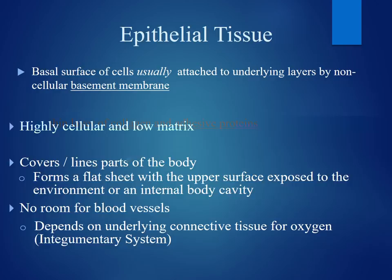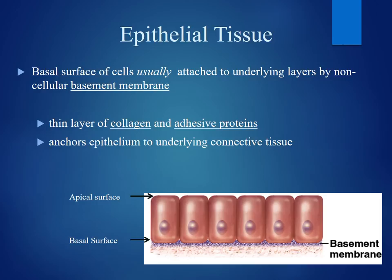Epithelial cells are typically going to be connected to the basal surface or the basement membrane. The basement membrane is non-cellular — it's not living. This is mainly a structural component that allows those cells to connect. There are two surfaces of tissues: the basal surface, which is the bottom part of the cells or tissue, and the apical surface, which is the top or superficial portion of the cell or tissue.